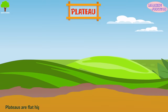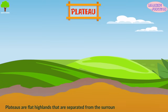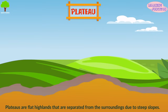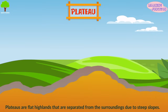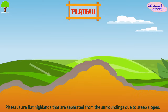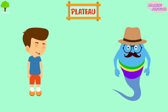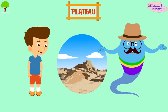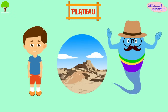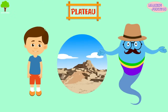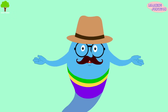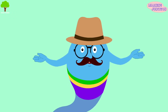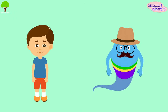Plateaus. Plateaus are flat highlands that are detached or separated from the surroundings due to steep slopes. They're formed by collisions of tectonic plates and magma action that causes elevation in Earth's crust. For example, the Indus Valley civilization came up near the river Indus. Now you know a lot about various forms of landforms. Stay tuned for the next video.